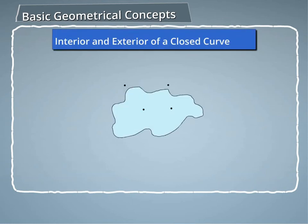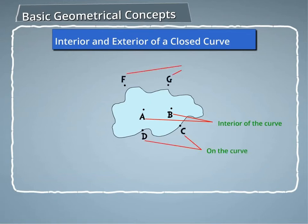Interior and exterior of a closed curve. The figure on screen represents a closed curve. In the figure, the points A and B are in the interior of the curve, the points C and D are on the curve, and the points F and G are in the exterior of the curve.